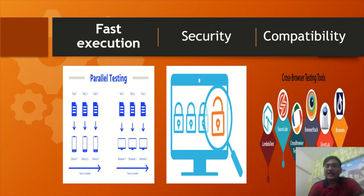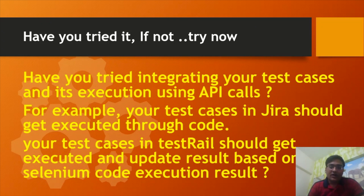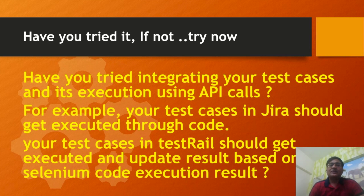From the security perspective, if you want to utilize your security testing techniques — whether related to API testing or UI functional and security checks — you can utilize different cloud technologies. For compatibility and cross-browser testing, you can utilize BrowserStack or Sauce Labs. Have you tried integrating your test cases and execution using API calls, so that your test cases in TestRail or any test case management tool get executed and results updated based on your Selenium code execution results?